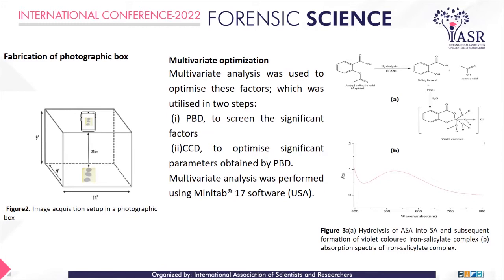As shown in the reaction scheme, aspirin is a colorless powder and lacks distinct absorption in the visible range, so it must be converted into a colored product by a colorimetric reaction so that DIC can analyze the intensity of the developed color. Aspirin was hydrolyzed into salicylic acid, which was then allowed to react with ferric chloride, leading to formation of an iron-salicylate complex that appears blue in the visible region.